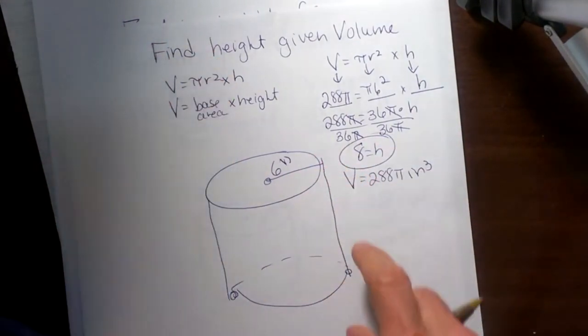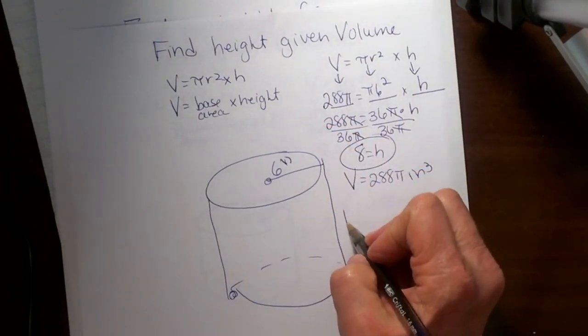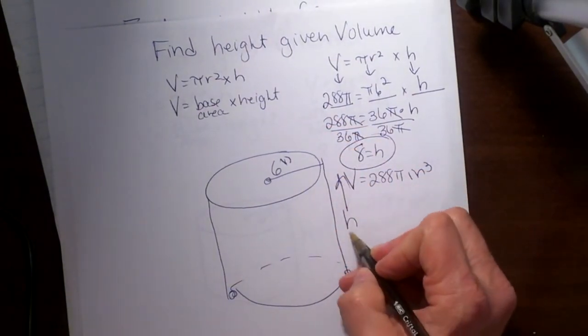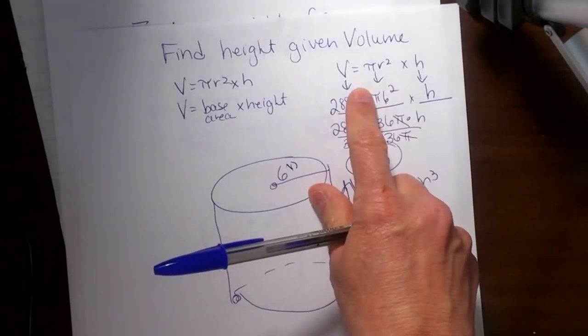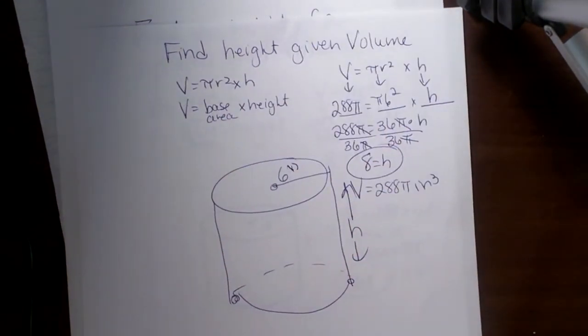And that is how you find the height of a cylinder given the volume. Figure out the base area, divide the volume by it, and you've got the height. Hope this was helpful.